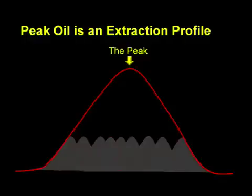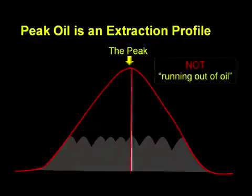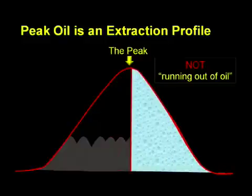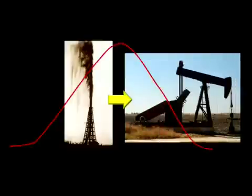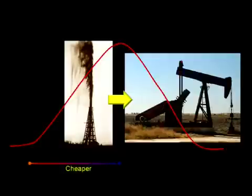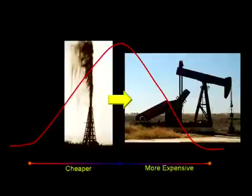Peak oil is not synonymous with running out of oil. At the moment of peak, somewhere right around half the oil still remains. But something interesting happens at the halfway mark: where oil gushed out under pressure at first, the back half usually has to get laboriously pumped out of the ground at higher cost. Where every barrel of oil was cheaper to extract on the way up, the reverse is true on the way down. Each barrel becomes more costly in terms of time and money and energy to extract. Eventually it costs more to extract a barrel of oil than it is worth, and that's when an oil field is abandoned.